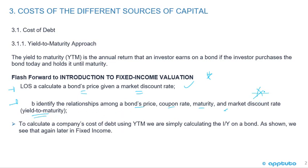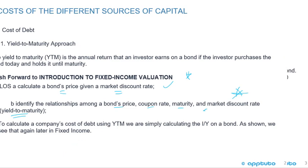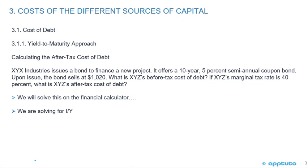The market discount rate that we calculate is the yield to maturity. To calculate a company's cost of debt using the yield to maturity, we are simply calculating the I/Y on a bond, as shown — we will see that again later in fixed income. Continuing with the cost of debt yield to maturity approach, we're going to look at an example where we calculate the after-tax cost of debt.